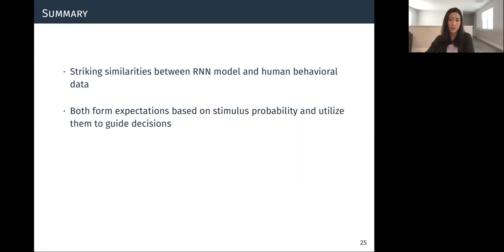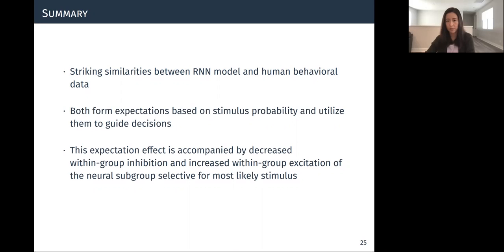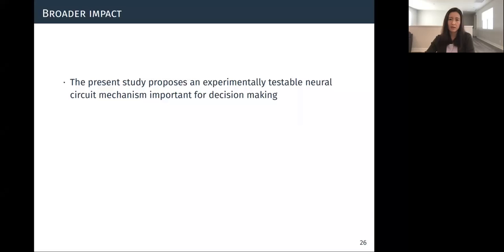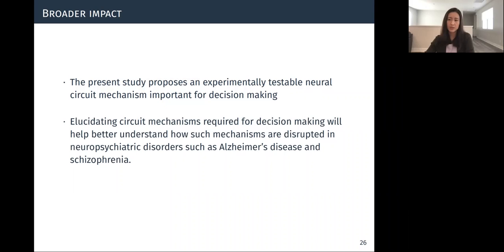Finally, by dissecting the trained recurrent network model, we demonstrate how competitive inhibition and recurrent excitation formed the basis for neural circuitry optimized to perform probabilistic information processing. And by analyzing both human and model data, our present study proposes an experimentally testable neural circuit mechanism important for decision making. And elucidating such mechanisms required for this complex decision making could help better our understanding of how such mechanisms are interrupted in neural disorders.